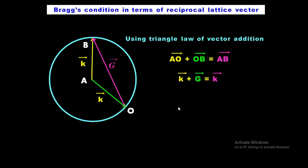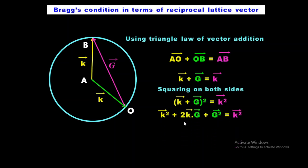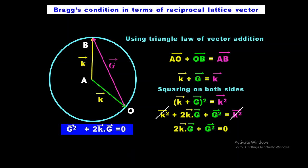Now squaring both sides — using (A + B)² = A² + 2AB + B² — we get: k² + 2k·G + G² = k'². Since the magnitudes of the incident and diffracted wave vectors are equal (elastic scattering), k² = k'², which gives us 2k·G + G² = 0. This is nothing but Bragg's law in vector form, also called Bragg's condition in terms of the reciprocal lattice vector, derived using the Ewald construction.